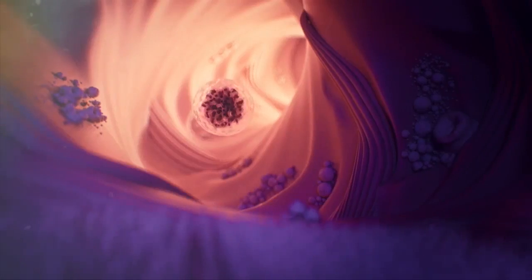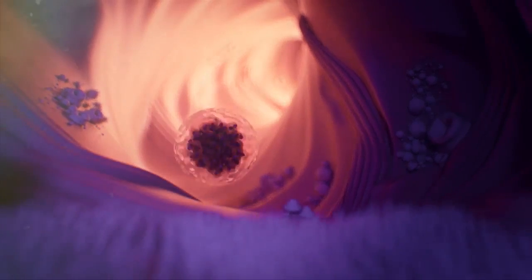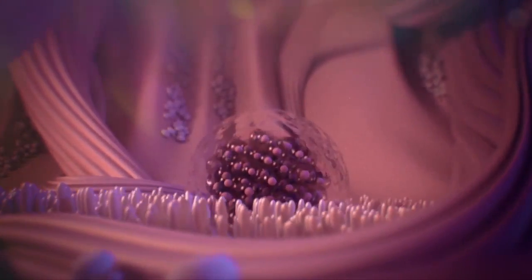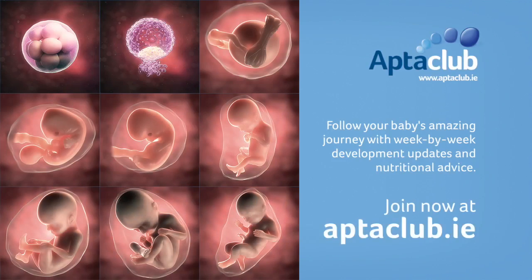a blastocyst is formed with an inner layer of cells making up the embryo and an outer layer which will protect and nourish the embryo. The blastocyst then finds a comfortable place to stay in the uterus for the next 40 weeks to develop and transform into a human being.